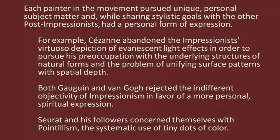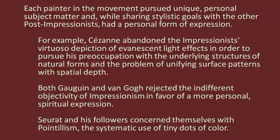So each painter in this movement pursued unique personal subject matter, and while sharing stylistic goals with other Post-Impressionist painters, they all had a personal form of expression. This is quite evident when you go through the paintings by Cézanne, Gauguin, Seurat, Lautrec, Van Gogh, and others. For example, Cézanne abandoned the Impressionist preoccupation with depicting evanescent light effects in order to pursue the underlying structures of natural forms and the problem of unifying surface patterns with spatial depth. Both Gauguin and Van Gogh rejected the indefinite objectivity of Impressionism in favour of a more personal, spiritual expression. Seurat and his followers concerned themselves with Pointillism — the systematic use of tiny dots of colour.